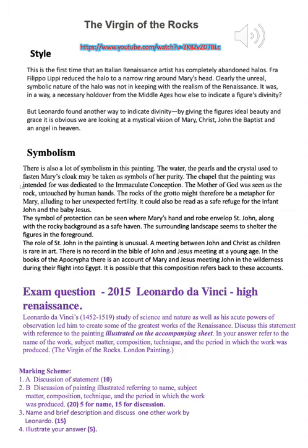There is also a lot of symbolism in this painting. The water, the pearls, and the crystals used to fasten Mary's cloak may be taken as symbols of her purity. The chapel that this painting was commissioned for was dedicated to the Immaculate Conception. The Mother of God was seen as the rock untouched by human hands, so the rocks of the grotto might be a metaphor for Mary, alluding to her unexpected fertility. It could also be read as a safe refuge for the infant John and the baby Jesus. The symbol of protection can be seen where Mary's hand and robes envelop St John, along with the rocky background as a safe haven.